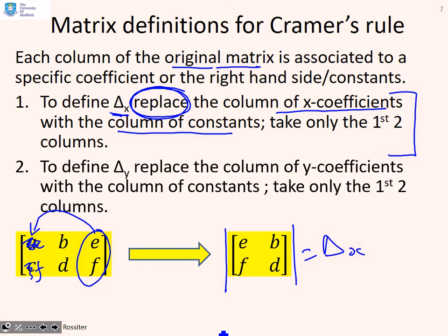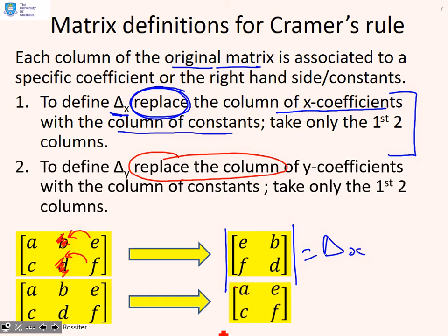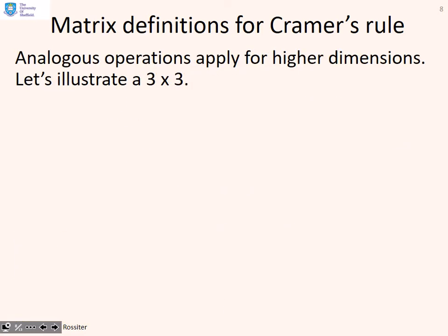To define delta_y, we use an exactly analogous technique. We replace the column of y coefficients with the column of constants. So I get rid of the coefficients related to y and replace them by the coefficients from the constant. And the determinant of a, e, c, f will give me delta_y.